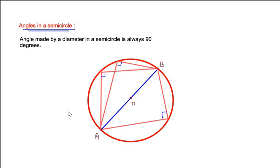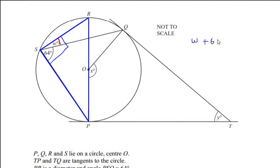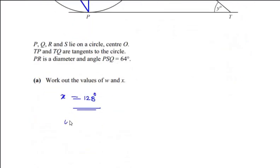In our example, POR is the diameter, and the angle made by POR is at point S in the semicircle. Because it is an angle made by the diameter in the semicircle, the entire angle is 90 degrees. This 90 degrees is formed by the two angles w and 64, so w + 64 = 90 degrees. Therefore w = 90 − 64 = 26 degrees.